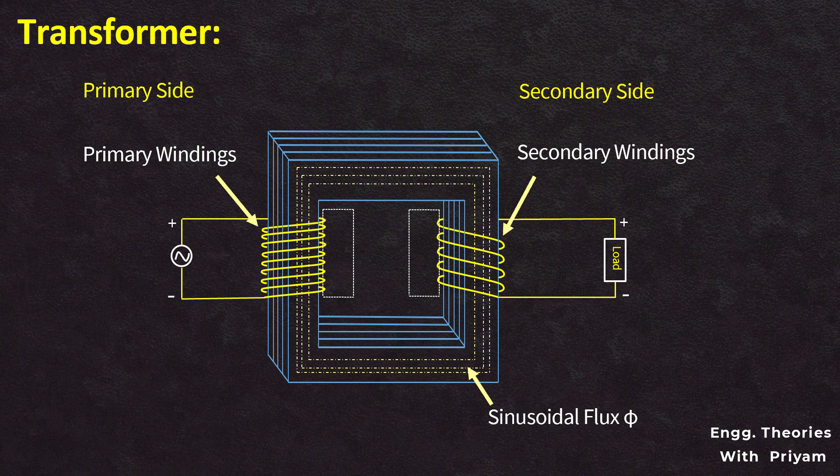However, some of the flux generated in the primary winding does not link with the secondary winding, which is referred to as the linkage flux.